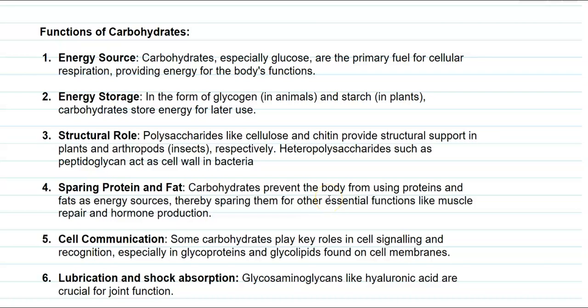Finally, we look at the functions of carbohydrates. The first function is that they serve as an energy source — the simple monosaccharide glucose serves as the primary fuel for cellular respiration, providing energy required for various body functions. The next function is energy storage: excess carbohydrates in living organisms can be stored as reserved polymers. Glycogen is the carbohydrate stored in animals, whereas starch is the polymeric carbohydrate stored in plants when present in excess. These carbohydrate stores can be used when a primary energy source is not available, as these complex forms can be hydrolyzed and used by the living system.